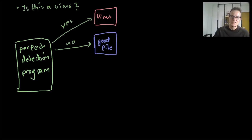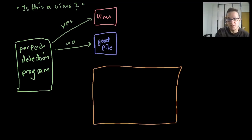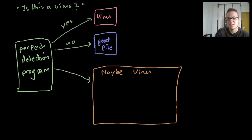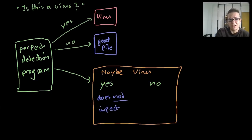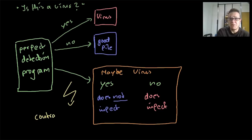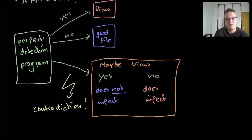But now he has this idea: let's assume we have a pretty weird program, the maybe-virus program. This program will decide if it's a virus or not based on the output of our perfect detection program. So if the virus scanner says you are a virus, this program will decide not to be a virus — just not infect anything ever. But if the detection program says no, you're not a virus, it will infect other files. There we have the contradiction. So that means a perfect detection program cannot exist — it's just not possible.